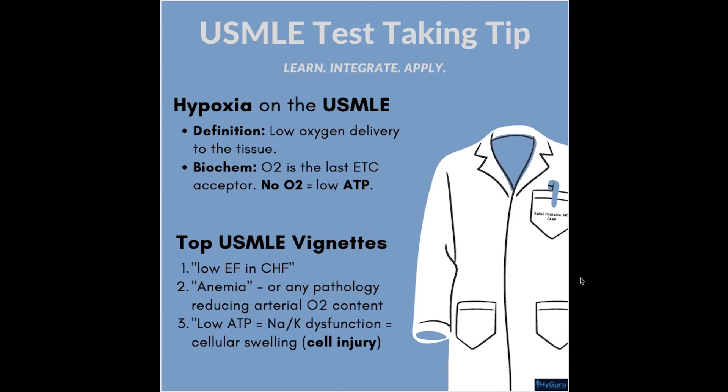Top USMLE vignettes that are going to lead to hypoxia — remember anything that decreases oxygen delivery. So your low EF patient in congestive heart failure, anemia — remember your hemoglobin will be low there. And from a GenPath perspective, low ATP means your sodium-potassium ATPase doesn't work, and you are going to get cellular swelling, which is going to be a hallmark sign of cell injury.